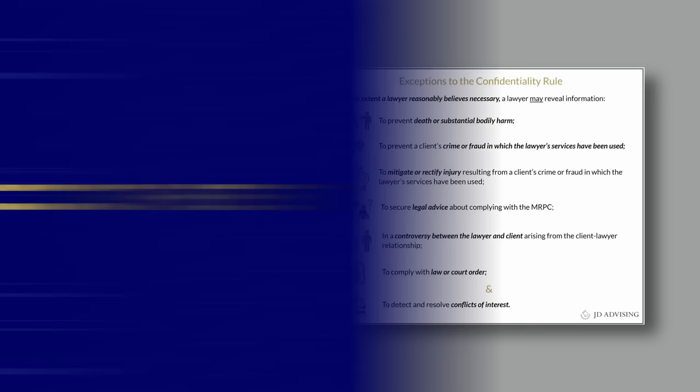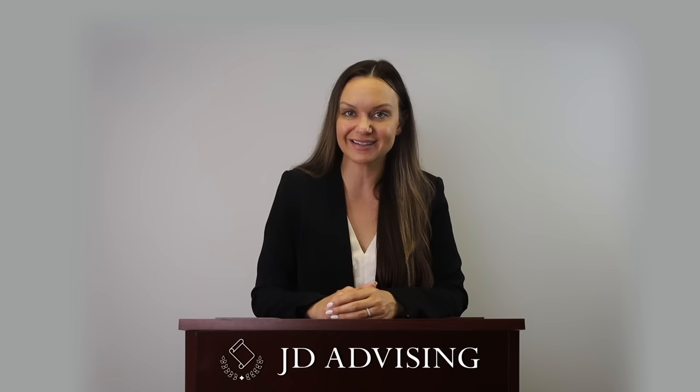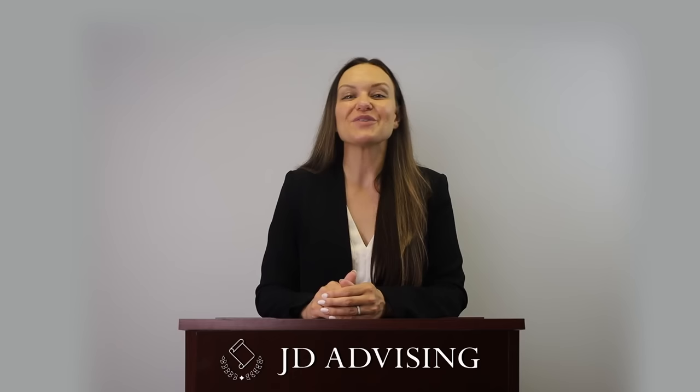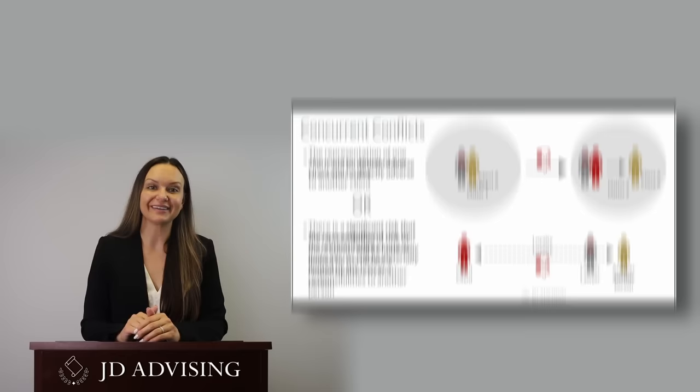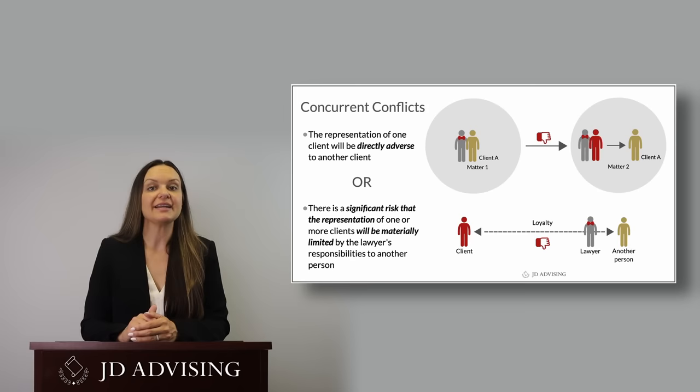Moving on to the fourth subsection, conflicts of interest. This is the most heavily tested subsection of the rules, making up 12 to 18% of your total exam. If you find yourself studying at the last minute, this is the subsection you should focus on first. The first rule is about current client conflicts. You shall not represent a client if doing so will create a current client conflict. Current client conflicts arise in two situations: if the representation of one client is going to be directly adverse to another — you can never represent a plaintiff versus a defendant in the same case.